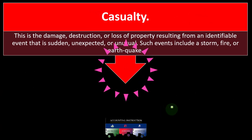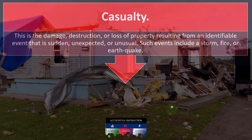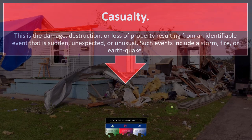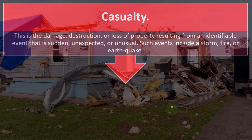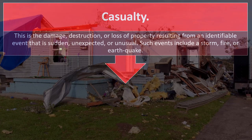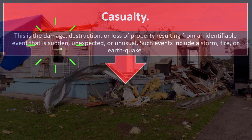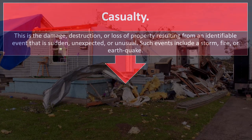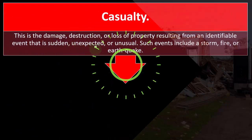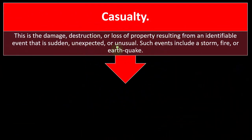Casualty is defined as the damage, destruction, or loss of property resulting from an identifiable event that is sudden, unexpected, or unusual. It was sudden — something happened out of the blue. Unexpected — if you could expect it, you would plan for it. Or unusual — not something that would typically be happening; otherwise you would take it into consideration and it wouldn't qualify as a casualty. Such events include storms, fire, or earthquake.